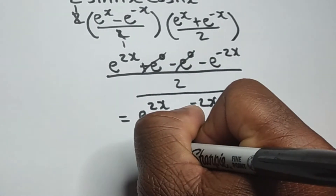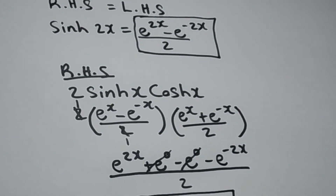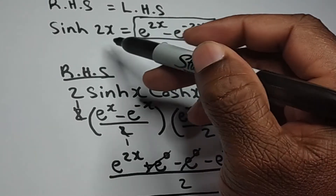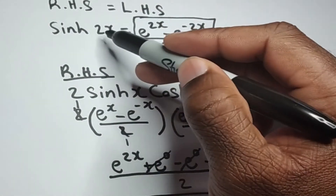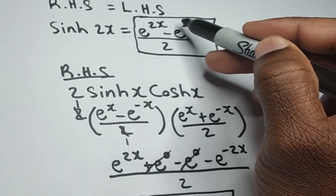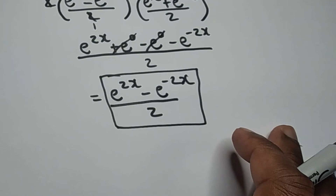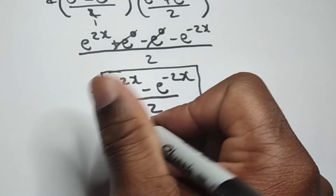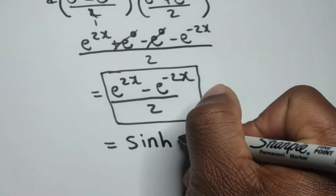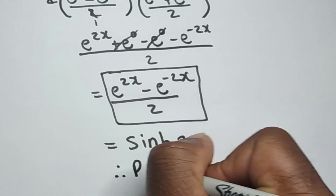Does this look like something you've seen before? Of course it does. This is the same thing as the definition we established earlier. Hyperbolic sine of 2x is defined as e to the 2x minus e to the minus 2x all over 2, which is exactly what we have here. Therefore, this expression is the same as hyperbolic sine of 2x. So we can say: therefore proven.